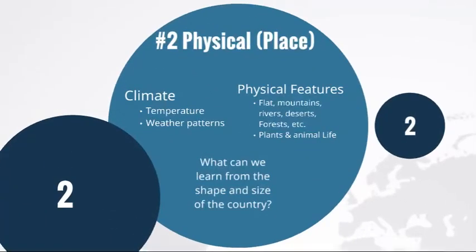The next theme is place. When we're considering place, we're looking at climate in terms of temperature and weather patterns, and the physical features of a place — for instance, its flat landscape, mountains, rivers, deserts, forests, and plants and animal life. We're going to be thinking and pondering the following question: what can we learn from the shape and size of a country?